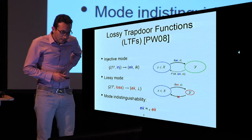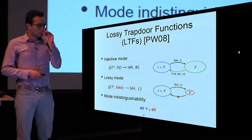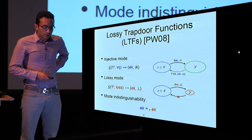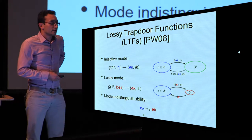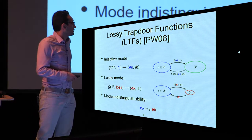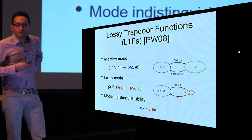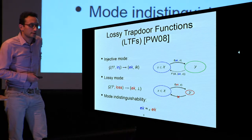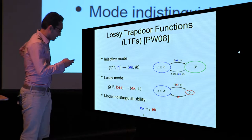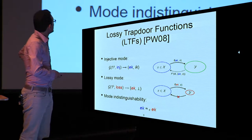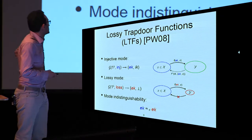Let's start with the definition of lossy trapdoor functions, introduced first by Peikert-Waters in 2008. The functions have two modes: injective mode and lossy mode. In the injective mode, you are given an evaluation key and an inverse key. Using the evaluation key, you can compute f at any x in the domain, and using the inverse key, you can recover x from the output y of the function.